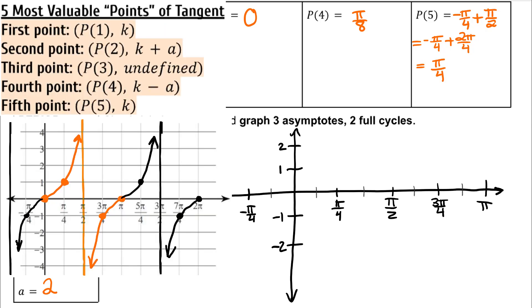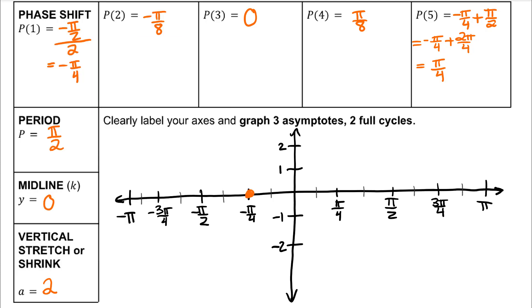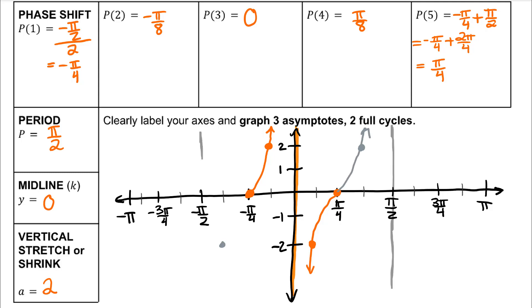For the y-values, you can follow the formula, or notice the shape of tangent's parent graph. Tangent begins at the midline, increases to a above the midline — in this case two units. P3 for tangent is a vertical asymptote. P4 is below the midline by a, two units, and P5 is back at the midline. Now continue the pattern to the left and right to graph one more period. Because your period is π/2, the spacing between your vertical asymptotes will be π/2.